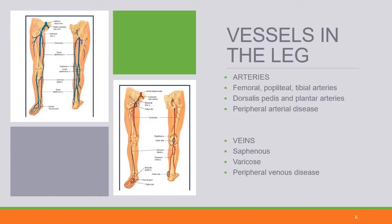In the legs, both the arterial and venous structures are significant. The femoral, popliteal, tibial arteries, dorsalis pedis, and plantar arteries are significant landmarks for palpating pulses — we'll talk about peripheral arterial disease. The saphenous venous system is the most important for venous access in the lower extremity. Varicose veins are more prominent in the lower extremities from intra-abdominal pressure and prolonged standing, leading to engorgement and dilation of venous structures which, when damaged, can bleed like an artery.